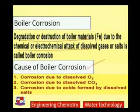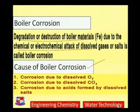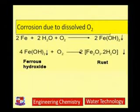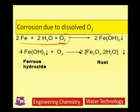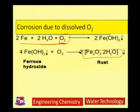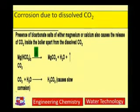A certain amount of oxygen is dissolved in water. When hard water containing dissolved oxygen enters the boiler, it may react with iron and cause rust formation or boiler corrosion. To avoid boiler corrosion due to oxygen, the water should be de-aerated. Regarding corrosion due to dissolved carbon dioxide: CO₂ is not generally present in significant amounts in water, but in hard water we have dissolved bicarbonate salts. Upon heating in the boiler, these bicarbonates get converted to carbonates and carbon dioxide is released.